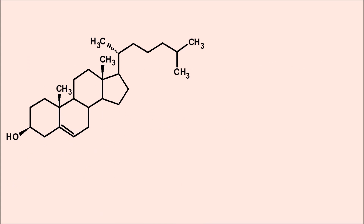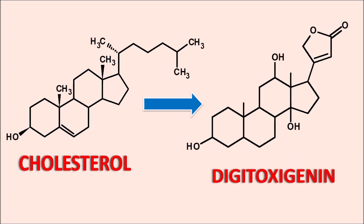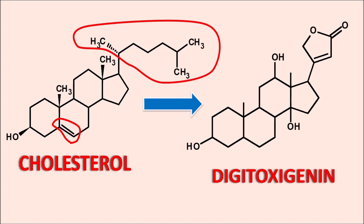One of the important precursors for the cardiac glycosides is cholesterol. Cholesterol has the cholestane nucleus with 27 carbons, and it is converted to one of the cardiac glycoside aglycones, the Digitoxigenin. The structural changes from cholesterol to Digitoxigenin include: the double bond at the fifth position in cholesterol is saturated in Digitoxigenin, and the large side chain at the 17th position of the steroid nucleus is converted into a five-membered lactone ring at the 17th position.